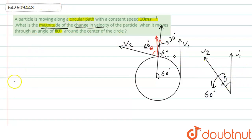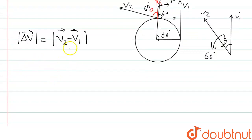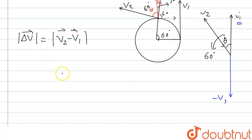Now we have to find the magnitude of change in velocity, that is |Δv| = |v2 − v1|. Since v1 appears with a minus sign, we draw negative v1, which is just the opposite direction of v1. Then we find the resultant of v2 and (−v1) using the parallelogram rule of vectors. So Δv equals root under the expression from the parallelogram law.